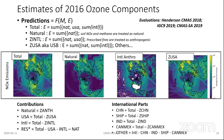The zero-USA run, sometimes referred to as the U.S. background run, has natural and the sum of international emissions, but not U.S. anthropogenic. Graphically, I'm showing the NOx emissions — total on the far left, then natural, then international anthropogenic where you can see no emissions over the U.S. or Alaska, and the zero-USA which is natural plus international without U.S. anthropogenic emissions.